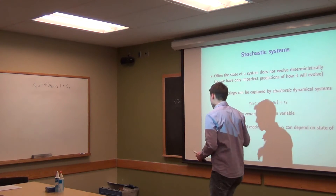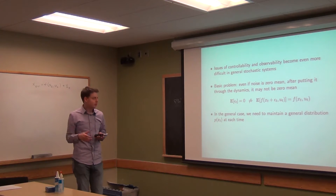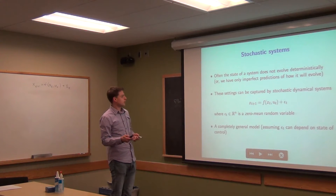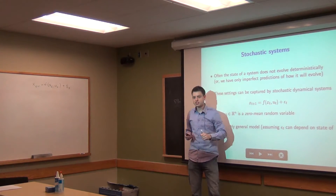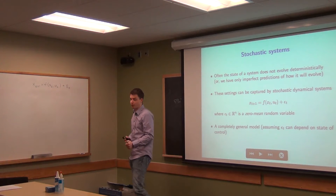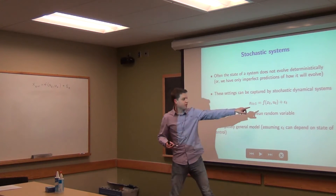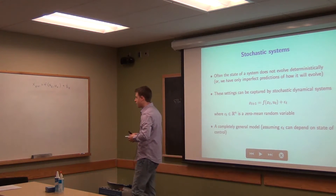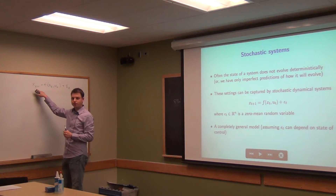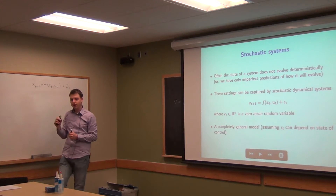The current state equals f of the current state and control plus epsilon_t, where epsilon_t is a zero-mean random variable. What that means is that on average, in expectation, this has value zero. So if we get the exact same state and the exact same control many times and average the results, then on average the next state will be f of x_t and u_t — that will be the mean value.